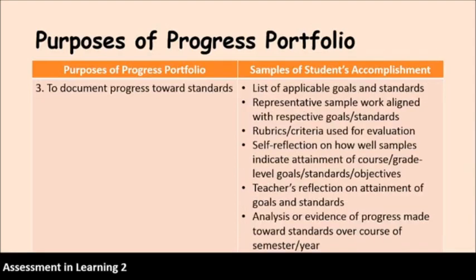The third purpose is to document progress towards standards. Since this is a progress portfolio, it is really an alternative way for the teacher to assess. Things to include: a list of applicable goals and standards, representative sample work aligned with respective goals and standards, rubric or criteria used for evaluation, self-reflection on how well samples indicate attainment of course goals, grade-level standards and objectives, teacher's reflection on attainment of the goals and standards, and analysis of evidence of progress made towards standards over the course of the year or semester.